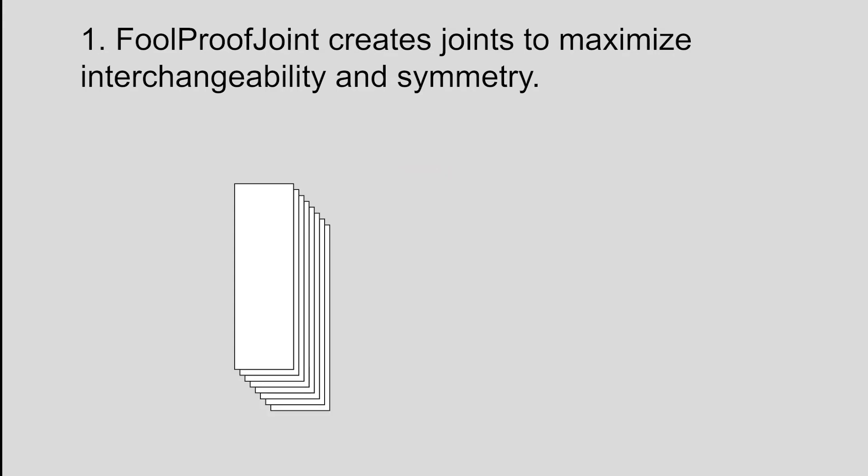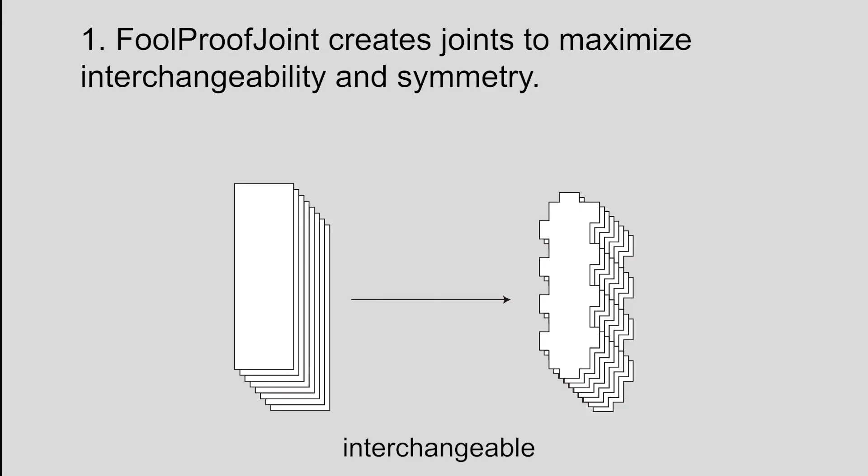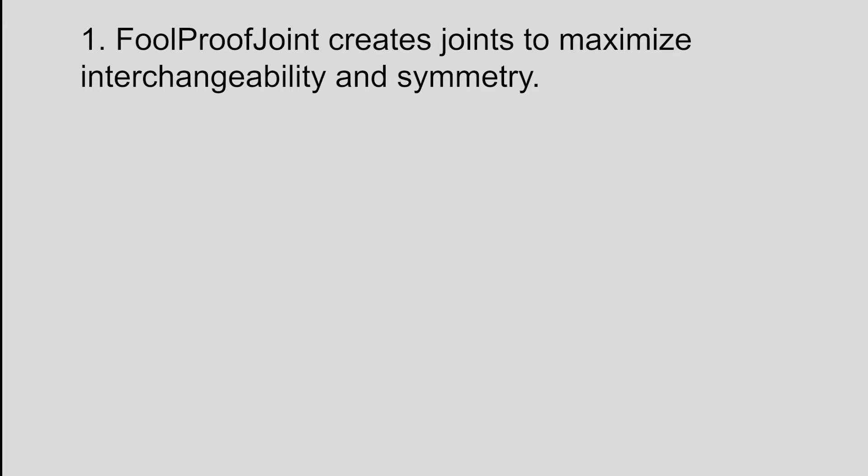If pieces have the same envelope, FoolProofJoint gives them the same joint pattern. If pieces have symmetric envelopes, FoolProofJoint gives them symmetric joint patterns.